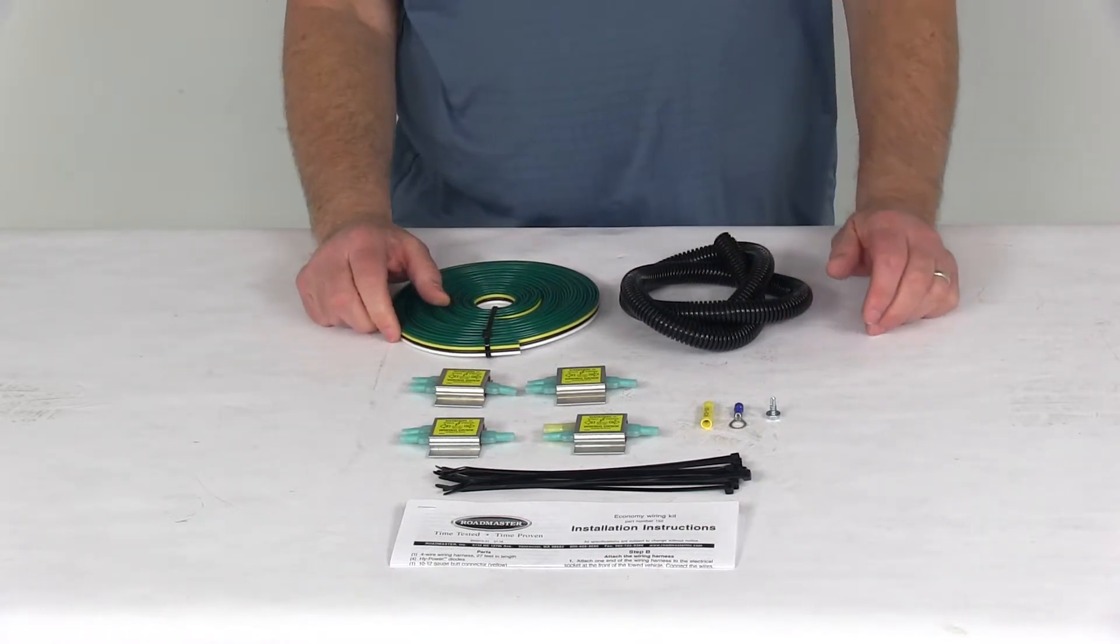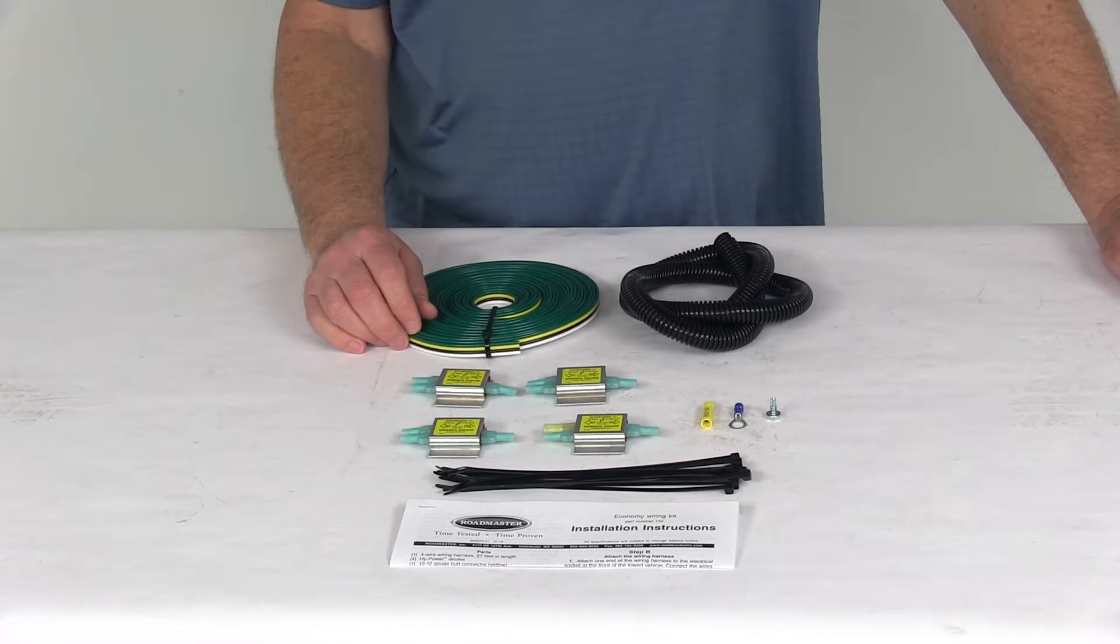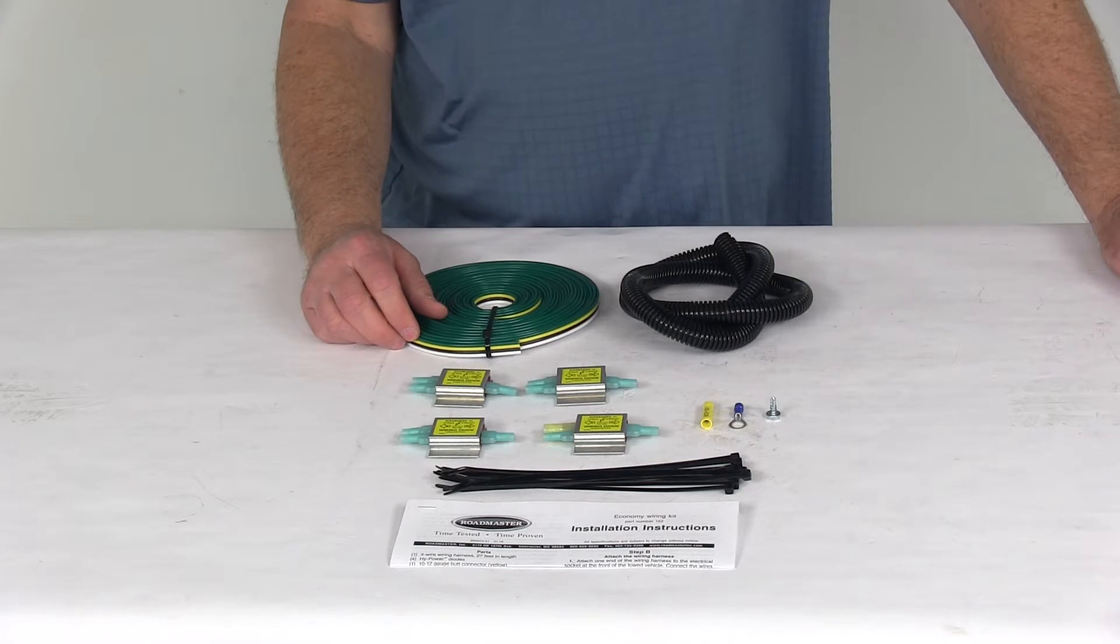And one last note on this part is for applications that have separate lighting, this kit will cause your brake lights to function as both brake and turn signal lights. So you do need a wiring converter and two additional diodes that we sell separately if you want to retain separate turn and brake signals.